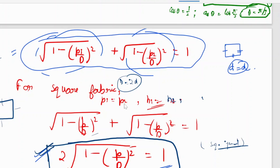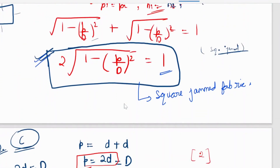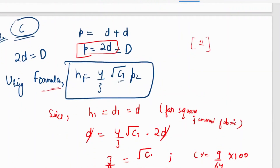Now let's look at an example. The question states: find the crimp percent of a square fabric in which thread spacing is equal to the yarn diameter and no jamming takes place.